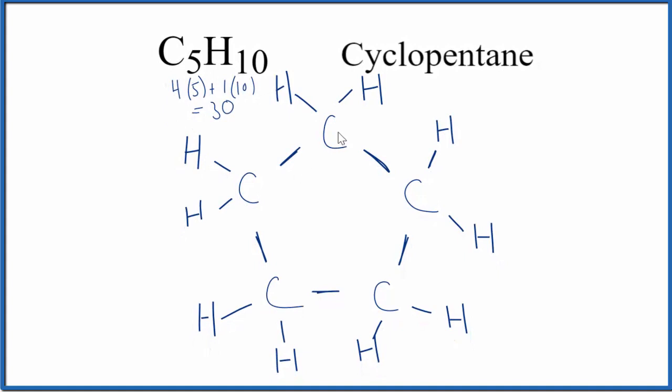At this point, we have our 1, 2, 3, 4, 5 carbons and 1, 2, 3, 4, 5, 6, 7, 8, 9, 10 hydrogens. They're in a ring with all single bonds. If you count the valence electrons, each one of these lines, each single bond represents 2 electrons. You'll find we've used all 30 of the valence electrons. So this is the Lewis structure for cyclopentane.